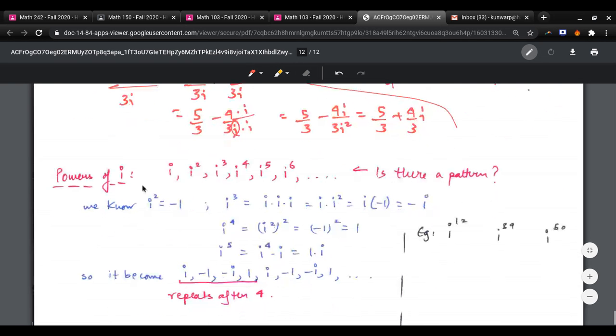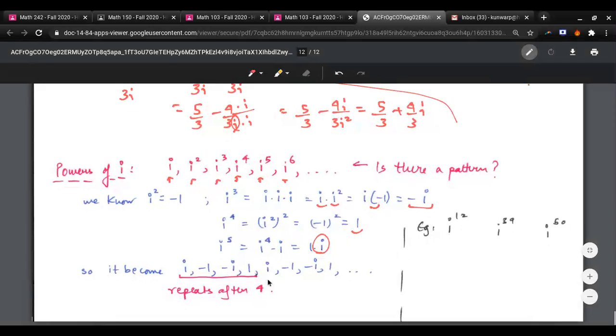Now, the last topic is powers of i. Now, consider i, i squared, i cubed, i4, i5, i6, and so on. The question is, is there a pattern? Let's see. We already know i squared is negative 1. Now, i cubed is going to be i squared times i, which is negative 1 times i. So, it's negative i. i to the 4th is i squared squared. Negative 1 squared is positive 1. And then i5 goes back to being i. So, this pattern, what it becomes is i, negative 1, negative i, 1, back to i.